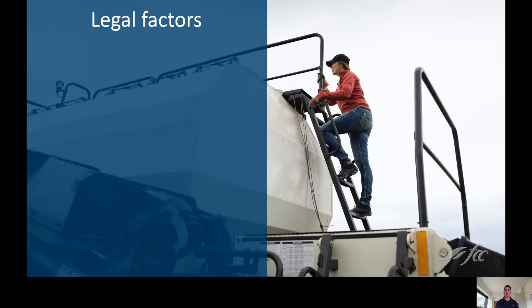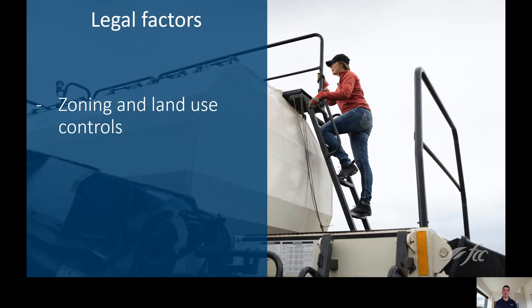Legal factors can also come into play. This can take many different forms. Number one is knowing the property's zoning and land use controls — in other words, knowing its permitted, conditional, and discretionary uses. Suppose we have a chicken barn which was built next to a town before any zoning bylaws were in place. This may be legally non-compliant now, but any further expansion may be restricted.